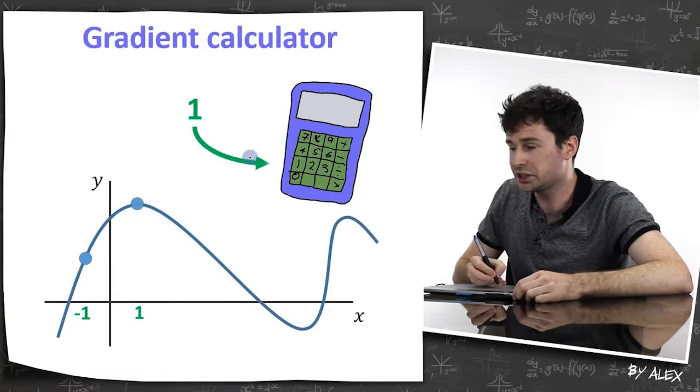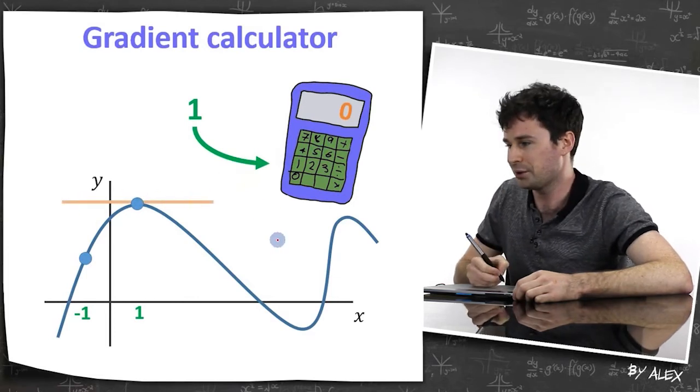We want to know the gradient at one. Well, we chuck one into our gradient calculator. It gives us zero. Yep, that makes sense, the gradient's about zero there.